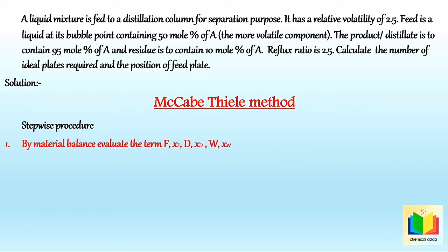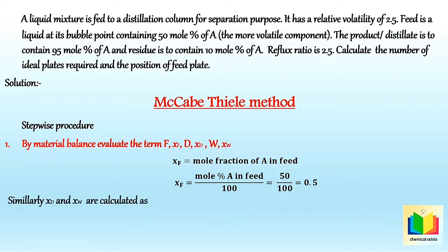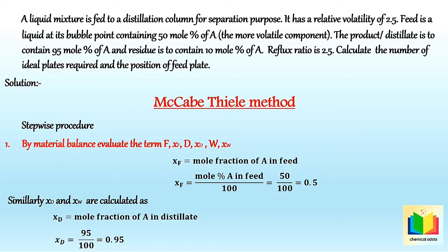The first step is to evaluate the mole fractions by material balance: xF, xD, and xW. As we know, xF is the mole fraction of A in the feed, so xF = 50/100 = 0.5. Similarly, xD is the mole fraction of A in the distillate, so xD = 95/100 = 0.95, and xW is the mole fraction of A in the residue, so xW = 10/100 = 0.1.